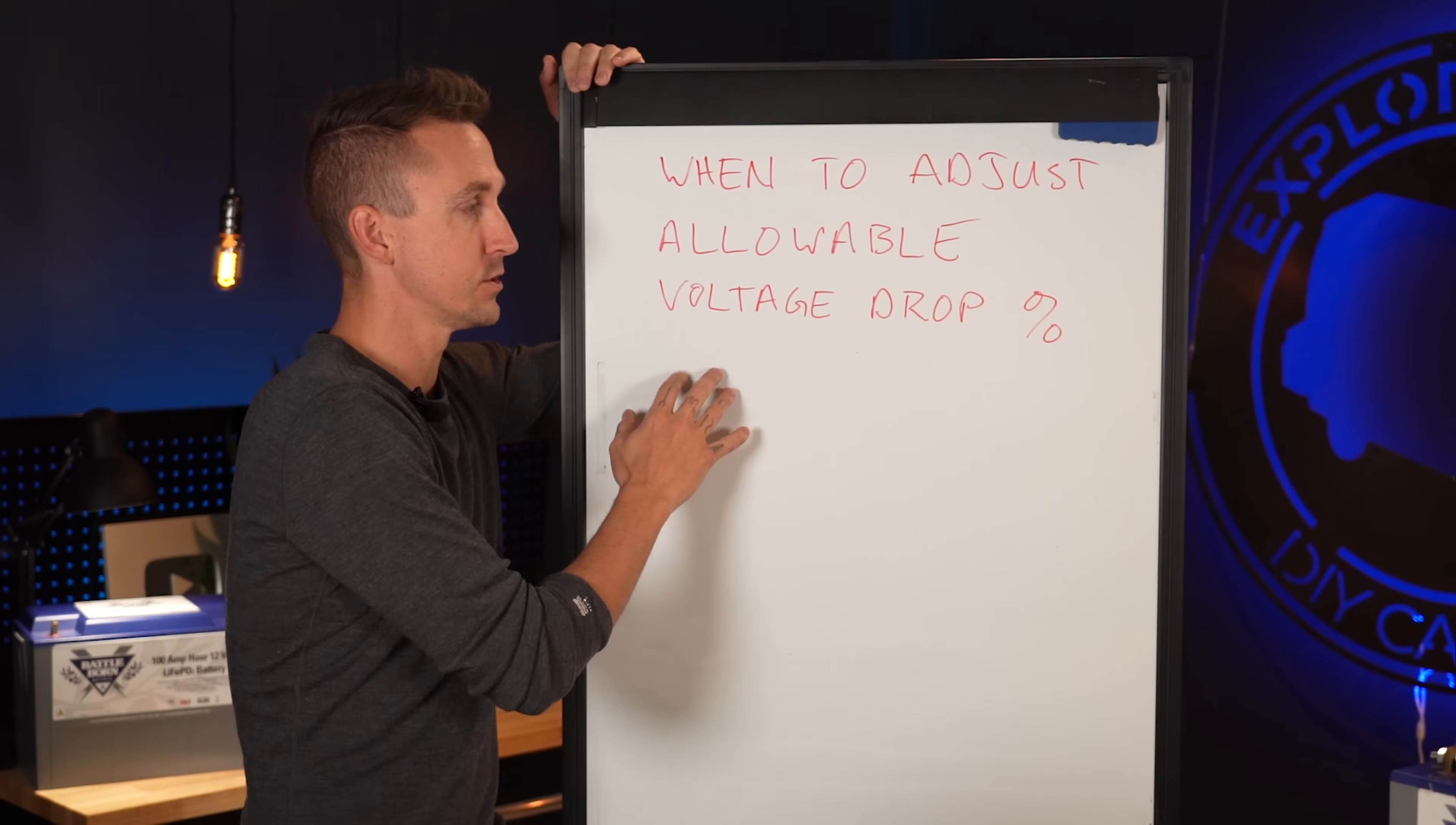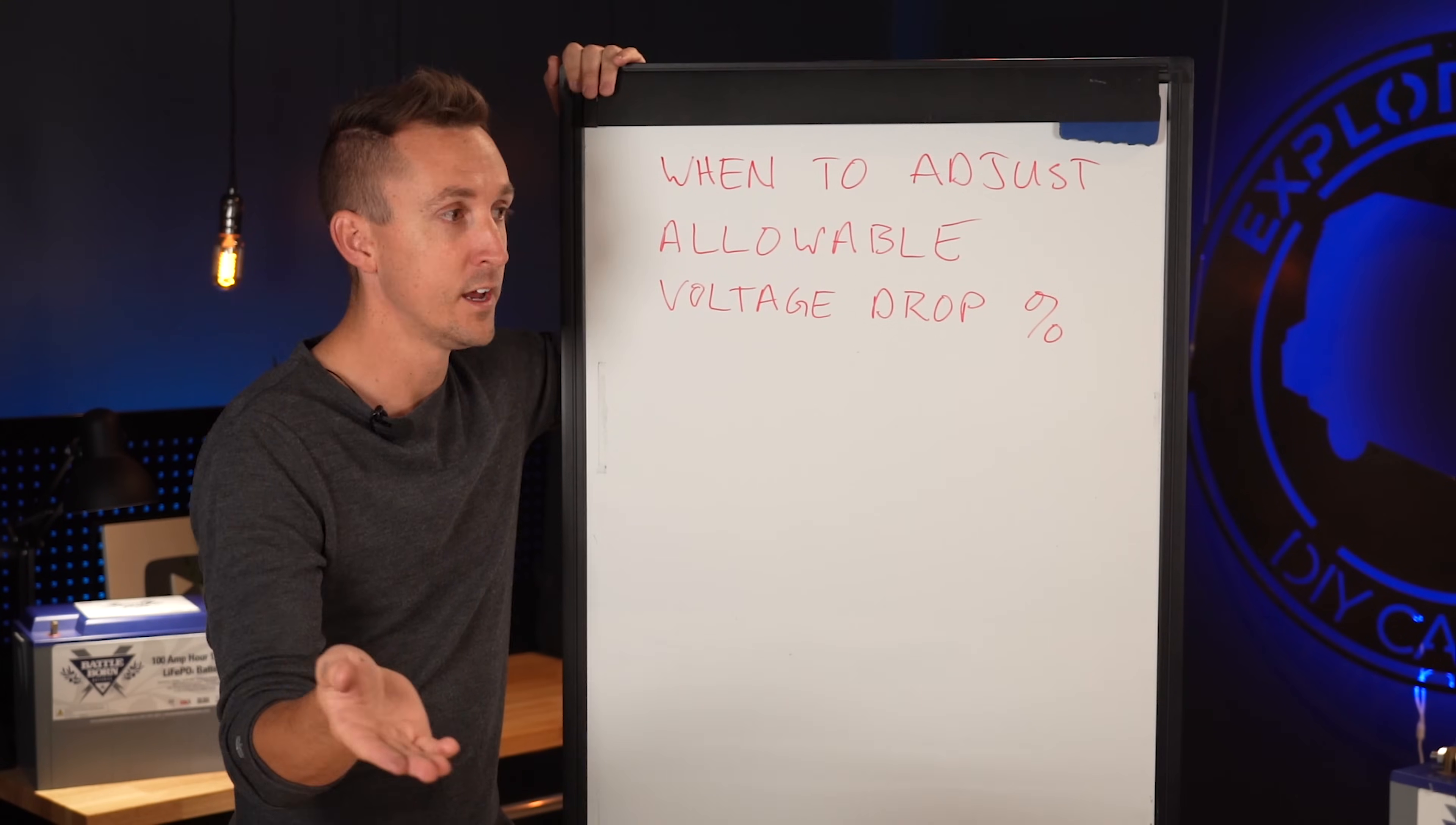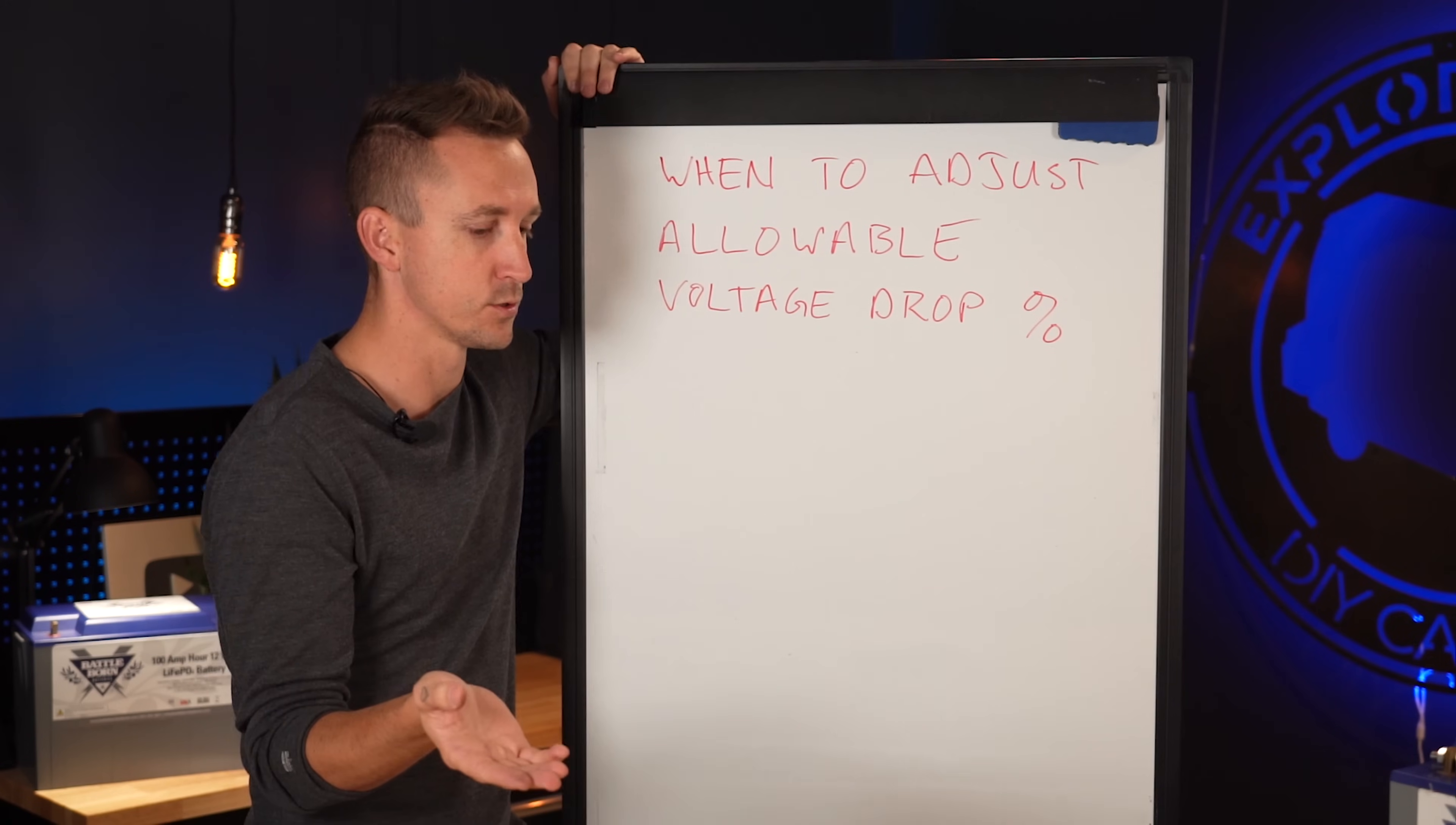10% voltage drop for all non-critical loads. So like the lights above your kitchen cabinets and all the stuff that you don't really need to operate your boat. But you know, in a camper van, we don't really have a whole lot of critical loads. You know, if something stops being powered electronically, it's not really going to put us in a bind usually.